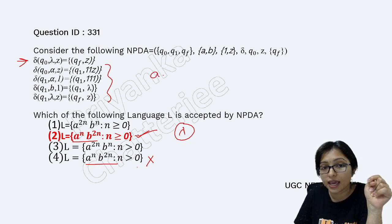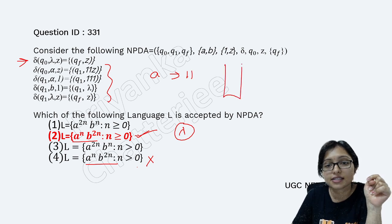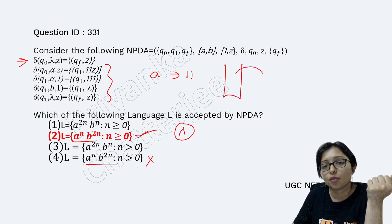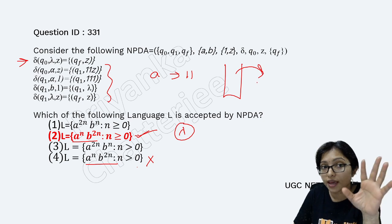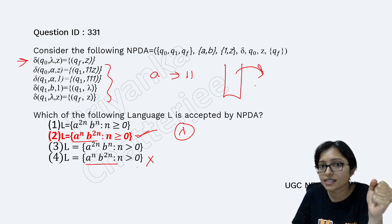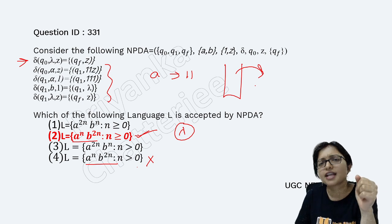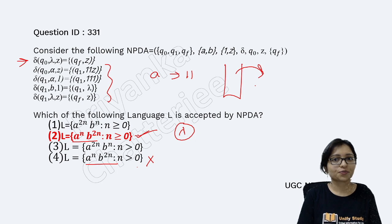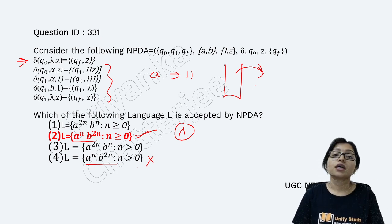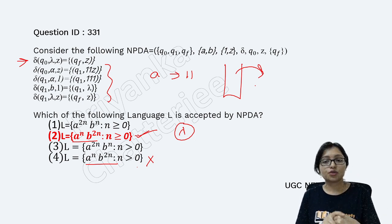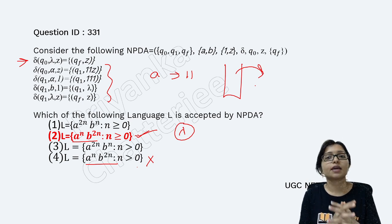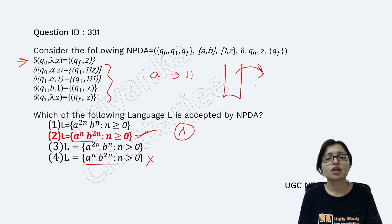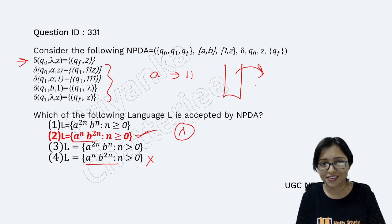For each and every a I am inserting 11 in the stack, and for each b I will pop one 1. In this way this machine is working. I hope you can understand it. If you understand, let me know in the comment section. There was another question in 2021 also like this, and it is a popular question in UGC NET and GATE — everywhere this type of question is asked. I will upload the 2021 question also if you show your interest. Thank you.